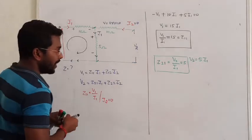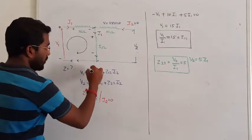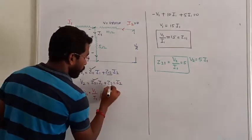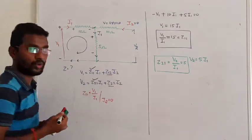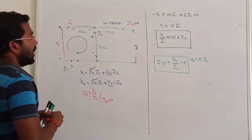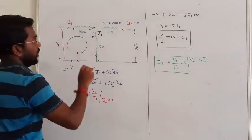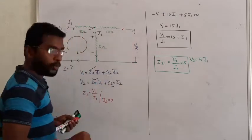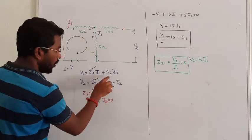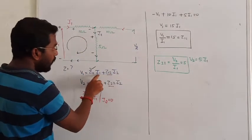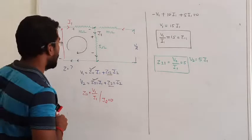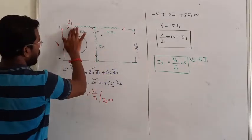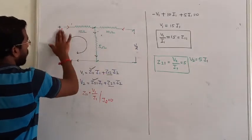Next, we need to find Z12 and Z22. To calculate Z22 and Z12, we set I1 equal to 0. With I1 = 0, the input port is open circuit. Let me show you the network now with V2 applied at the output port and I2 flowing.